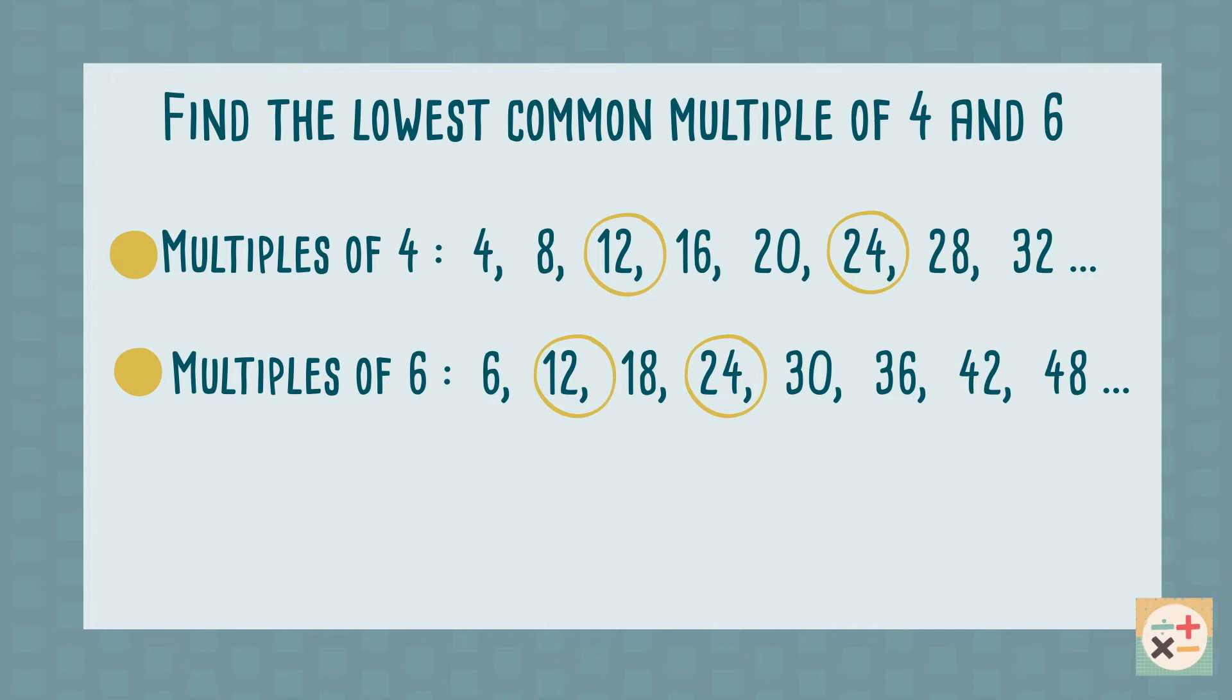The circled numbers are the common multiples. The smallest of these numbers is the lowest common multiple.